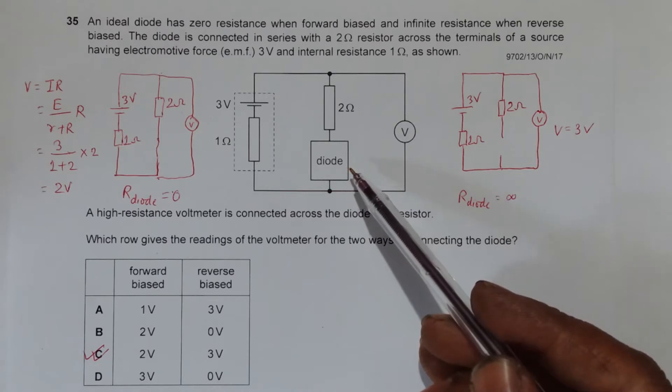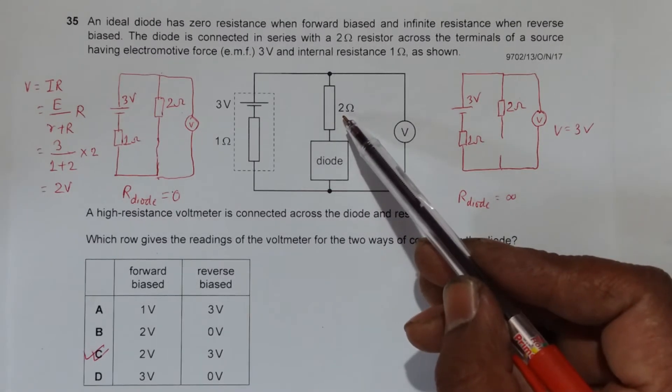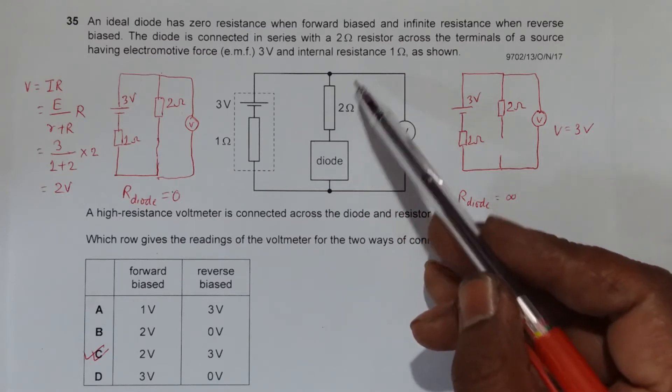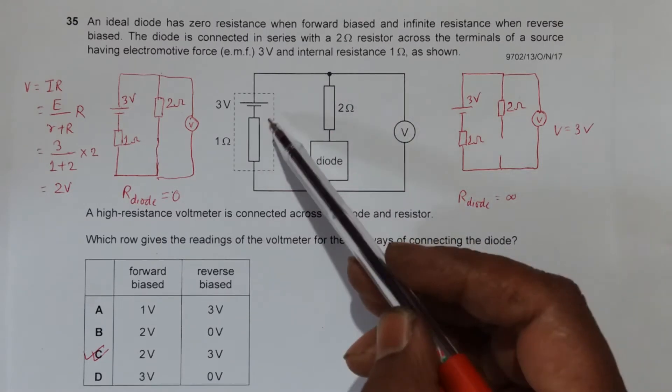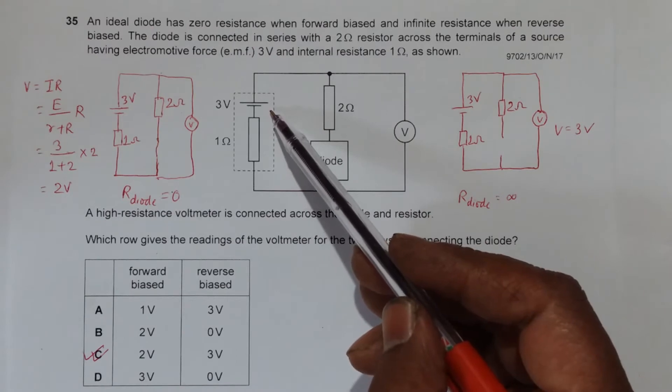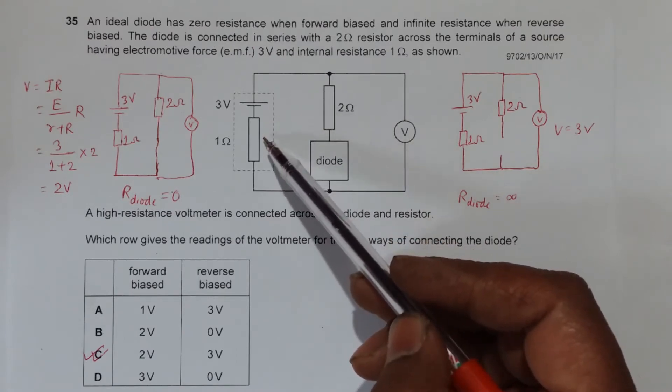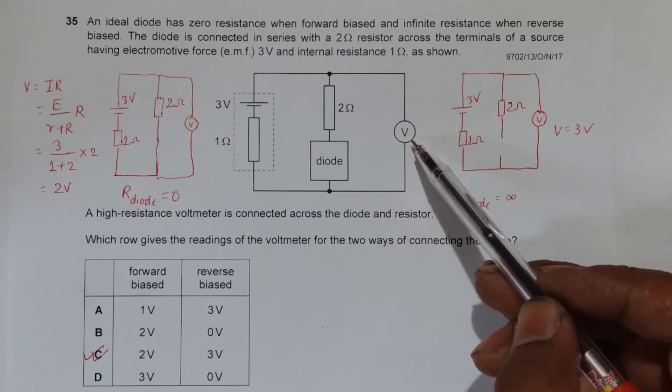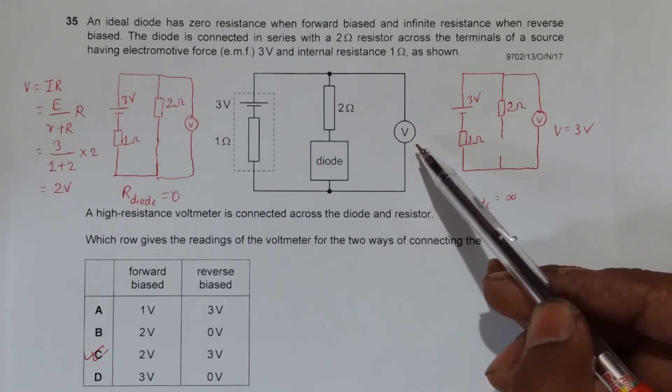The diode is in series with a 2 ohm resistor here, and across this we have a source of EMF of 3 volts which has a 1 ohm internal resistance. Then we have a high resistance voltmeter connected across the diode and resistor.